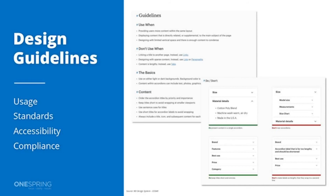These design guidelines are commonly referred to as the do's and don'ts of how you implement particular components. Other important guidelines to include are guidelines around accessibility — for example the standards of 508 compliance, or WCAG — the Web Content Accessibility Guidelines.